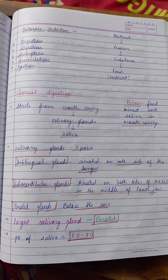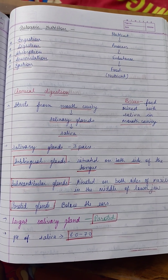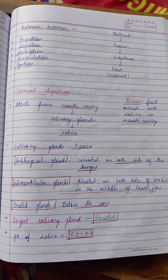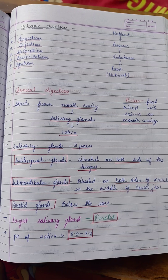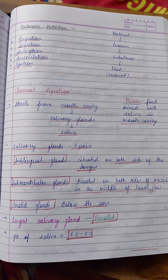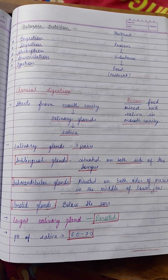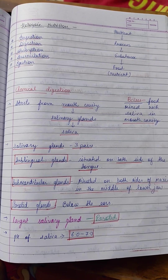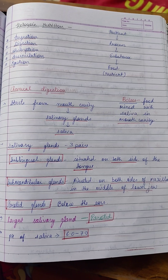Chemical digestion starts from the mouth cavity. It has salivary glands. There are three pairs of salivary glands: sublingual glands, submandibular glands, and parotid glands.